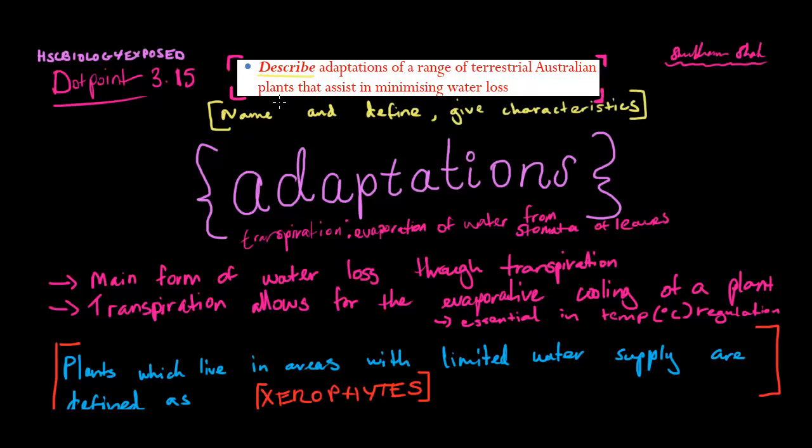Hi, today we're going to be going through dot point 3.15, which is describe adaptations of a range of terrestrial Australian plants that assist in minimizing water loss. So describe, that's basically name and define, as well as give characteristics. That's exactly what we're going to do today.